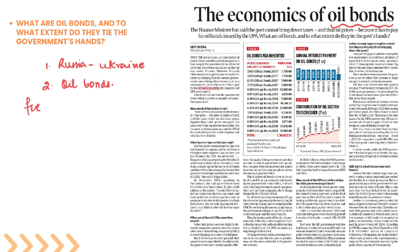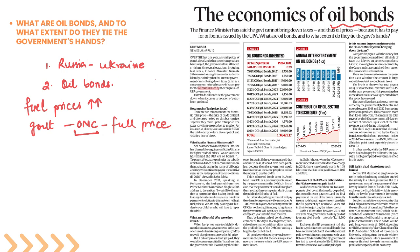In the past, when fuel prices increased significantly, the government asked oil manufacturing companies not to sell fuel at full market prices — to charge consumers less. But if companies sell at lower prices, how will they get paid? They would become unprofitable. The government also didn't want the full burden of fuel prices to fall on domestic consumers. So the government said it would pay the difference.